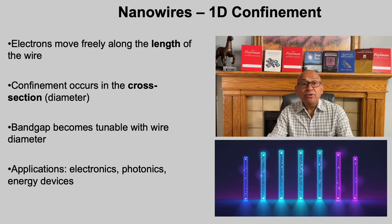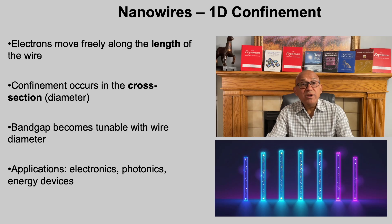In nanowires, electrons are free to move along the length of the wire, but their motion is restricted in the cross-sectional directions. This one-dimensional confinement alters the available energy states, allowing us to tune the band gap simply by changing the diameter of the wire. As a result, nanowires display unique electrical and optical properties not found in bulk materials. They are promising for use in transistors, nanoscale interconnects, light-emitting devices, and even next-generation solar cells and batteries. In short, nanowires bridge the worlds of quantum confinement and real device applications.